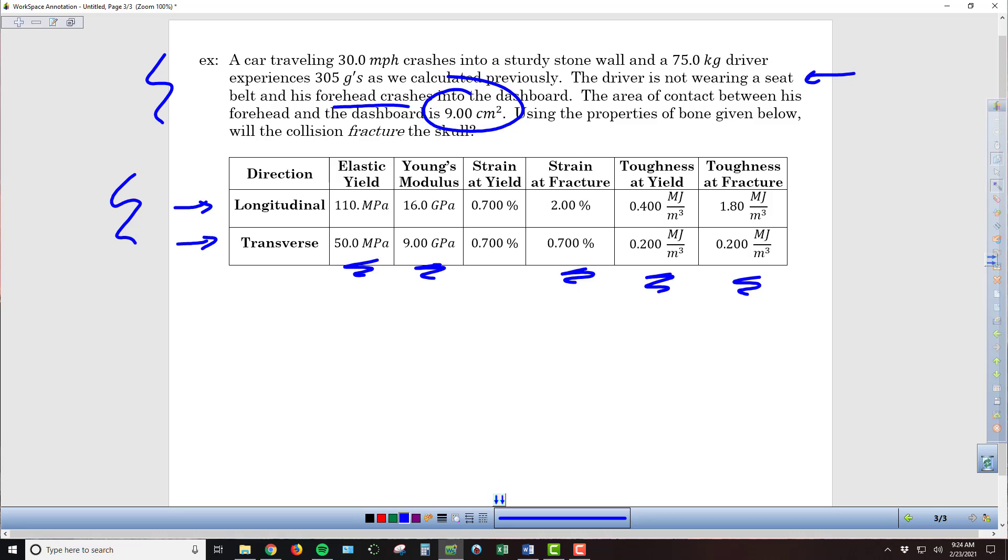We're going to use the transverse properties of the bone, we want to know if the collision will result in a skull fracture. Since we're impacting transverse to the orientation of the fibers of the bone, it's going to be in this transverse direction.